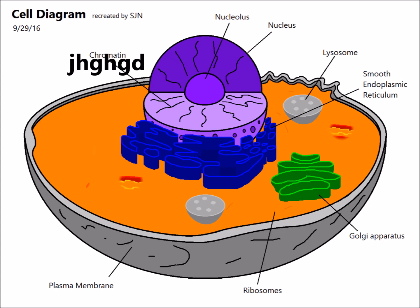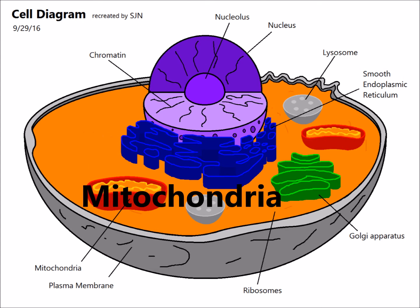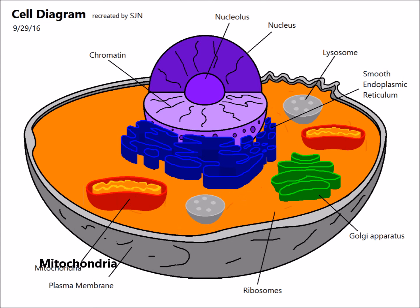And now we have the mitochondria, which produces most of the cell's energy. In this diagram, the mitochondria is red.